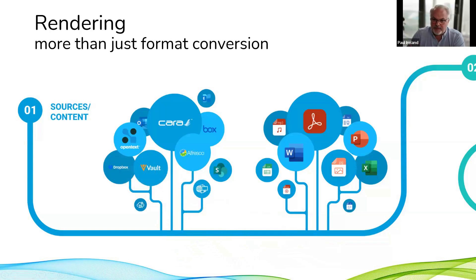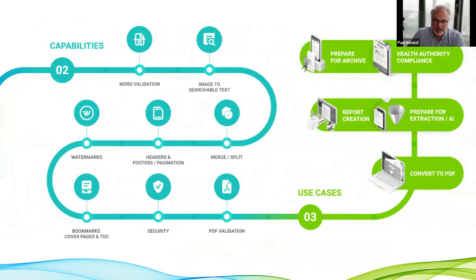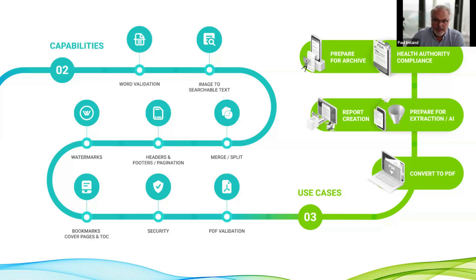It takes content from different repositories including Viva Vault and does many things with them — for example, converting into PDF, but also checking and validating the Word document for issues, making content text-searchable by OCRing it so it has searchable text in the PDF, merging multiple files together into single files to get the correct granularity within submissions or for report generation, and splitting files that exceed industry health authority size guidelines.